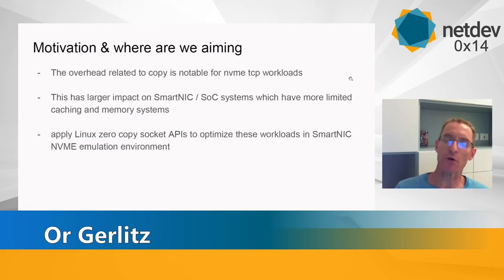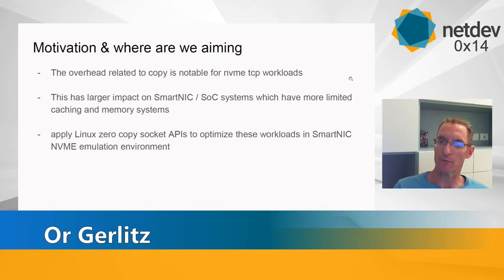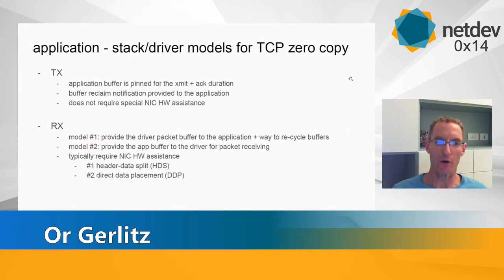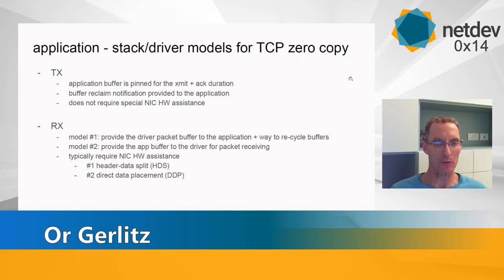The idea in this work was to apply some of the new APIs introduced in Linux in the last year for zero copy, to optimize this workload in an environment of a smart NIC doing NVMe emulation. First, I'd like to go over the general models that could be used for TCP-based zero copy — it can be applied to any socket application, though the focus here was TCP.